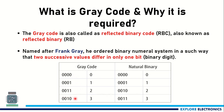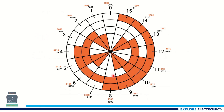Similarly, looking at 2 and 3, only the first bit changes and the rest of the bits are the same. So for successive values, you will always get only one bit difference. But in binary numbers, looking at 1 and 2, multiple bits change simultaneously. In gray code, we can expect only one bit change — that is the advantage of gray code.